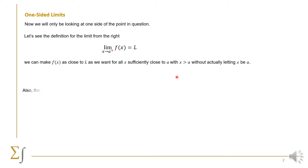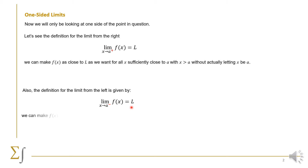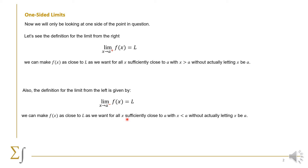Similarly, the limit of f(x) as x approaches a from the left — denoted with a minus sign — is equal to L. So we can make f(x) as close as we wish to L as long as x is sufficiently close to a where x is less than a, without actually letting x be a itself.